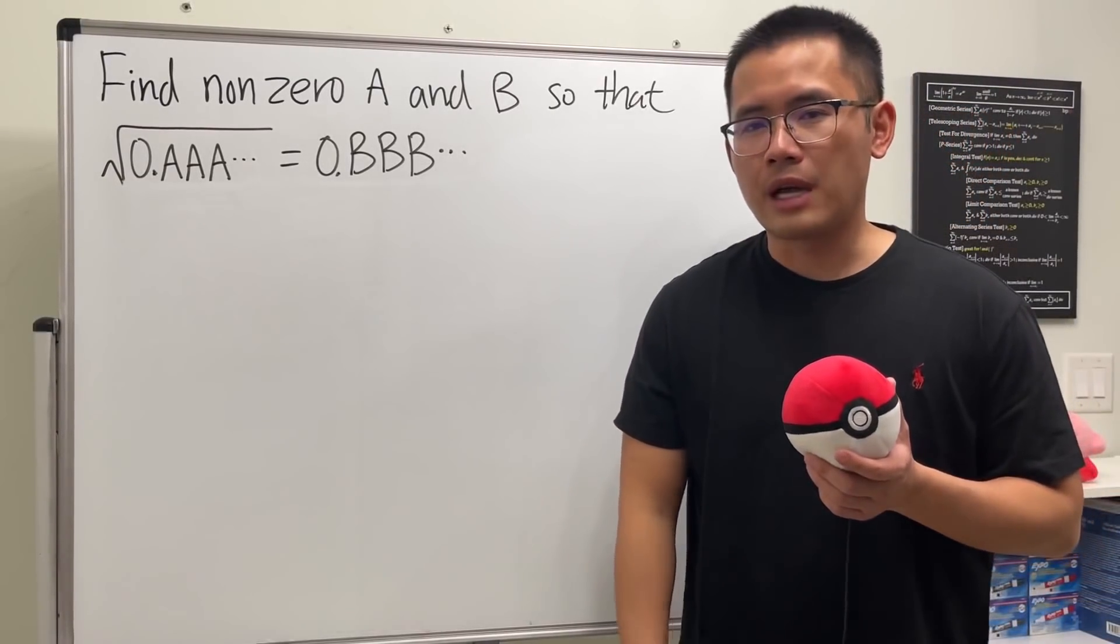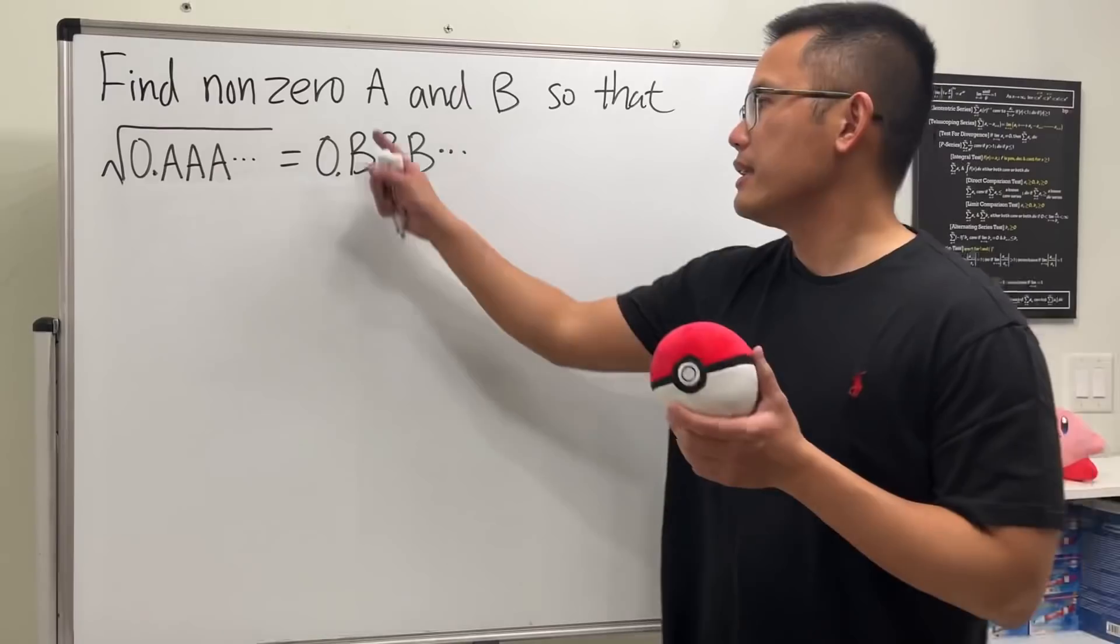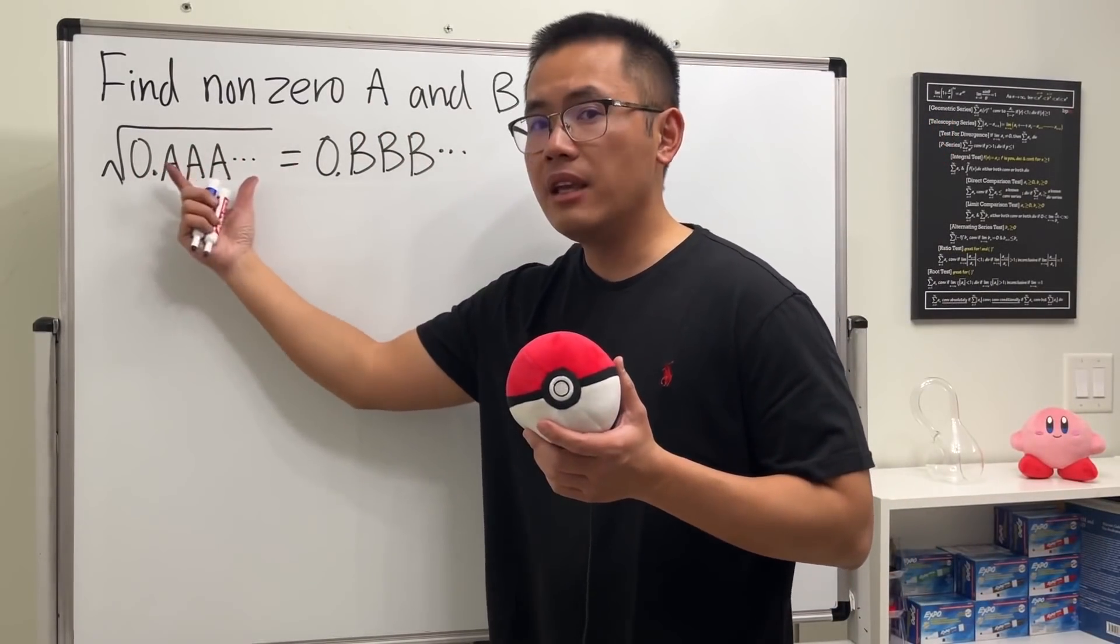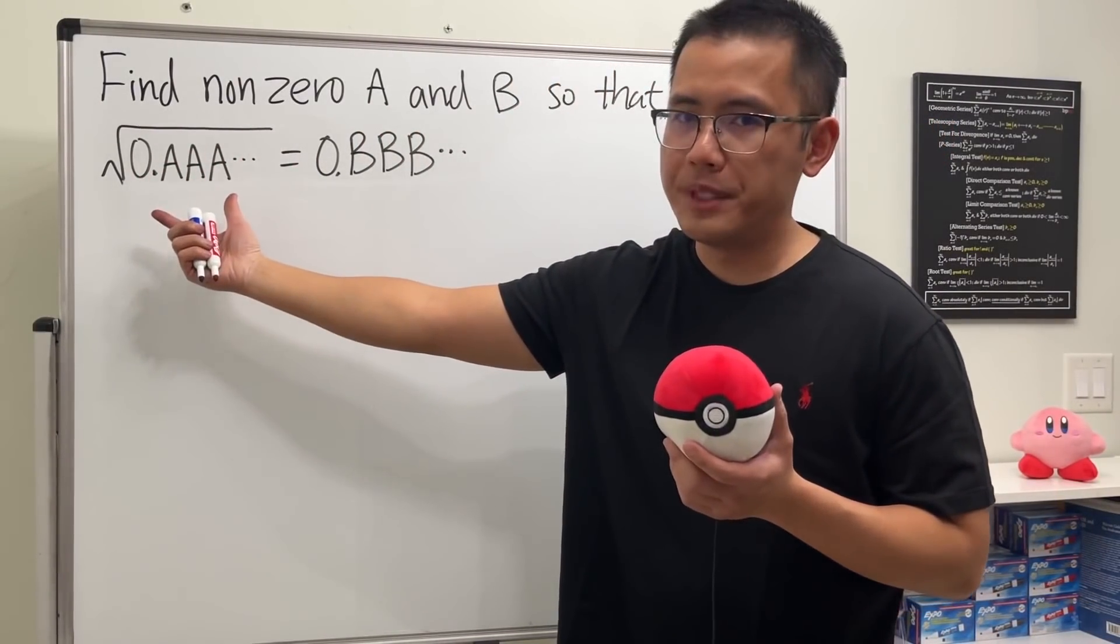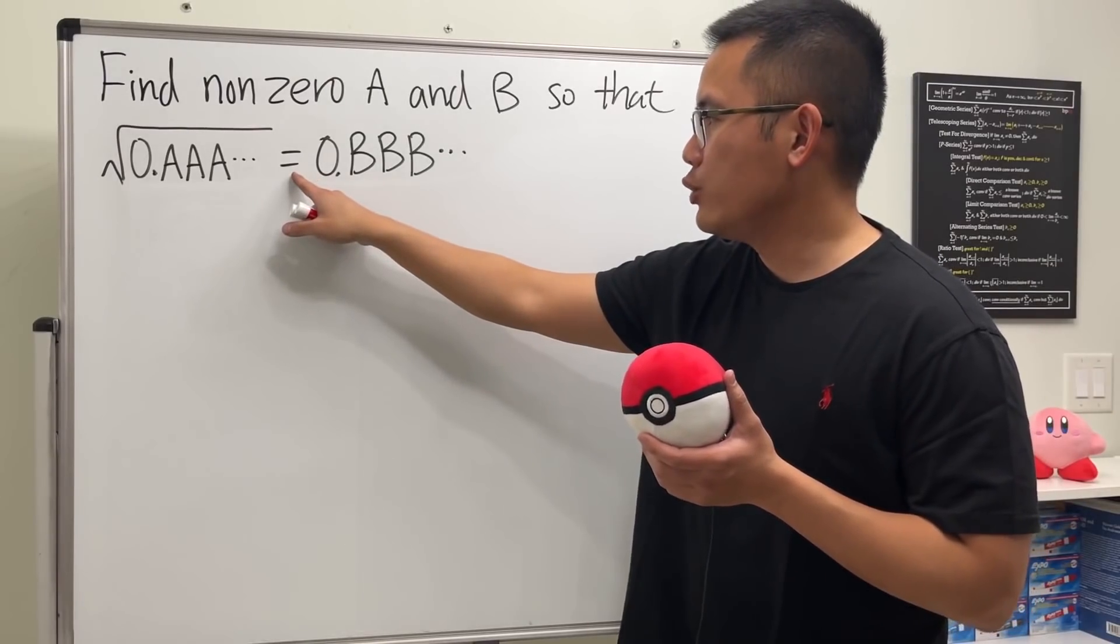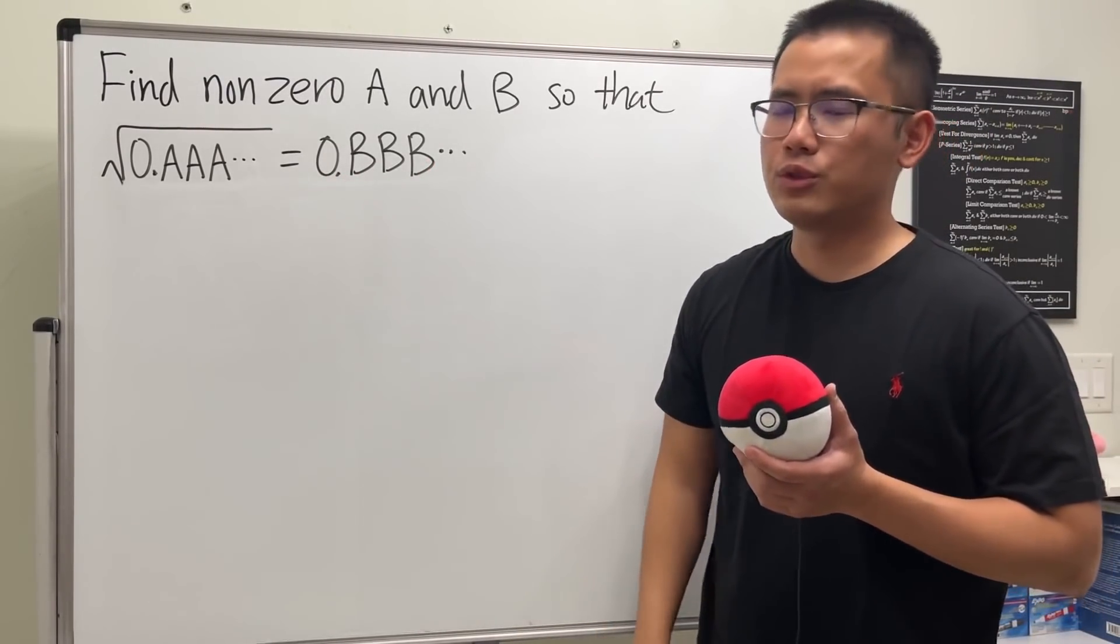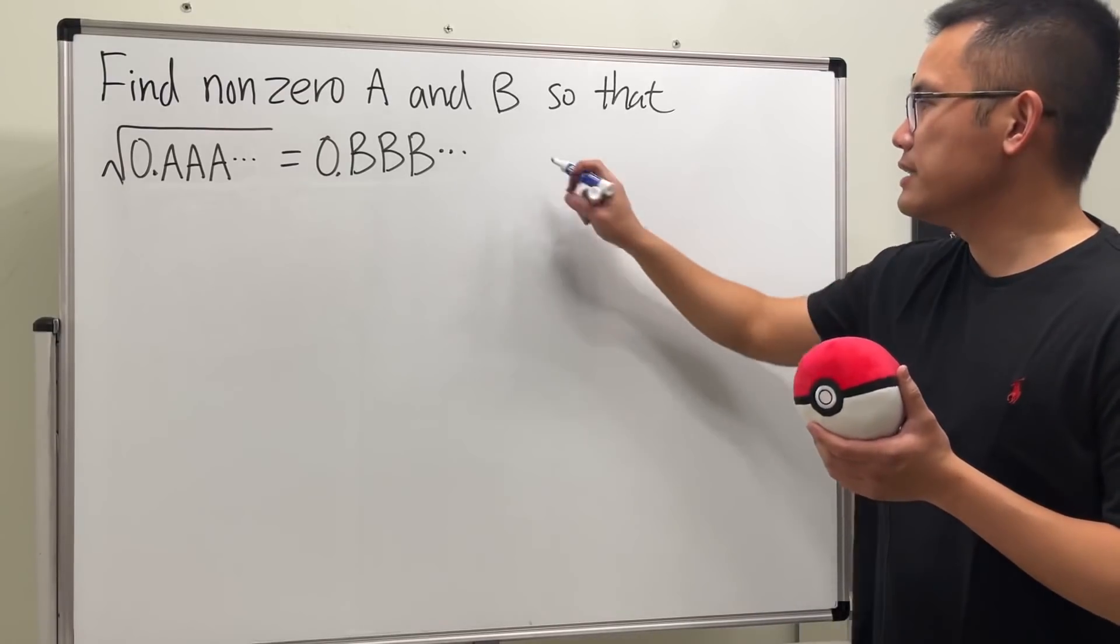This is a very classic math competition question. We are going to find non-zero A and B so that the square root of 0.AAA... forever—a repeating decimal—equals 0.BBB... forever. How can we make this true?